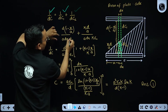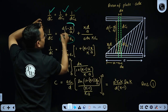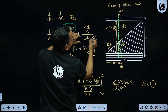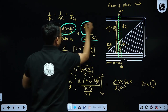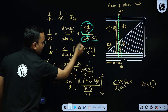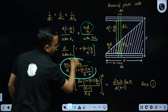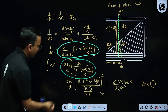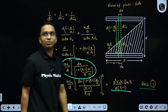dC1 has area A·dx with separation d(1 − x/a), and dC2 has area A·dx with dielectric constant K and separation d·(x/a). Solving for dC and integrating — since all these strip capacitors are in parallel — I sum up dC over the full length to get the total capacitance. The final answer is option 1.